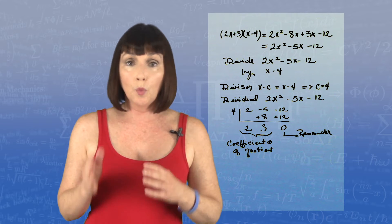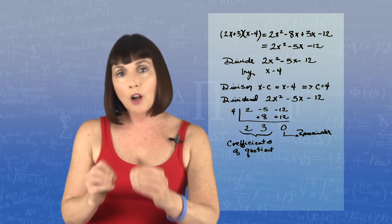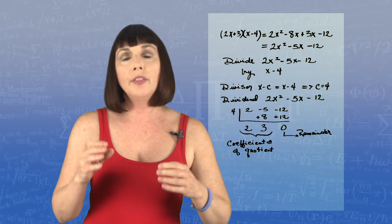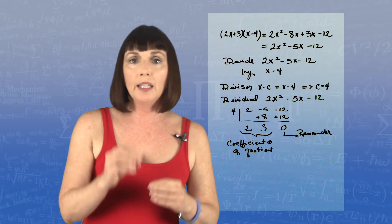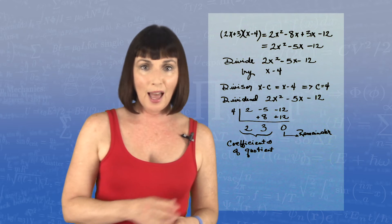The other numbers are the coefficients of the quotient. The number next to the remainder, one place left to it, that's your constant value. And then you go up one degree in the variable for each value to the left.